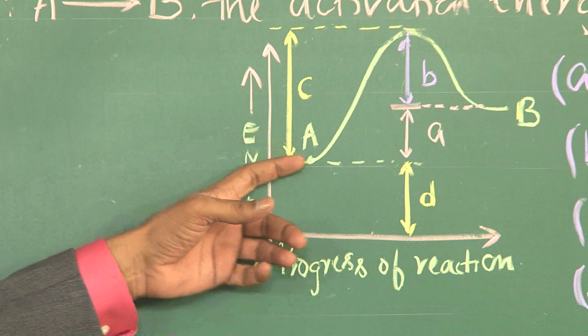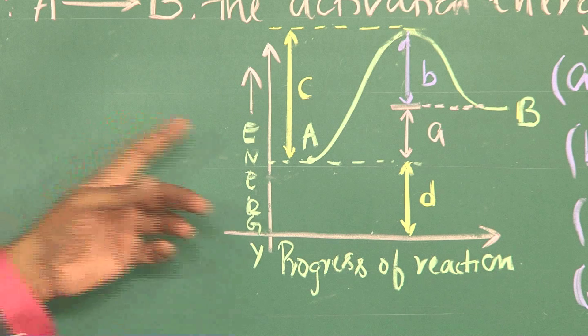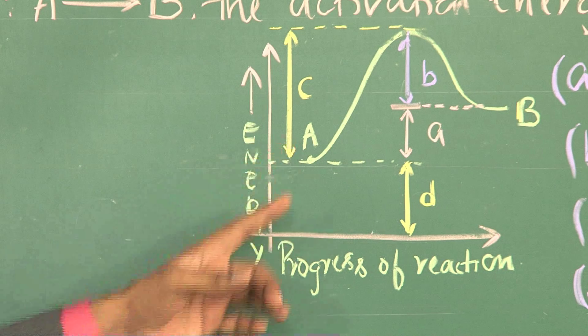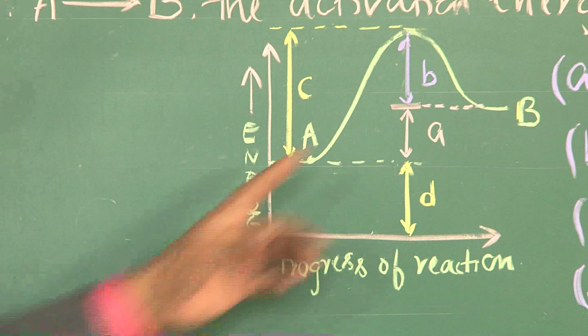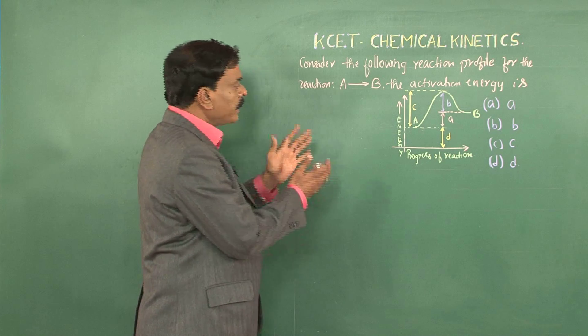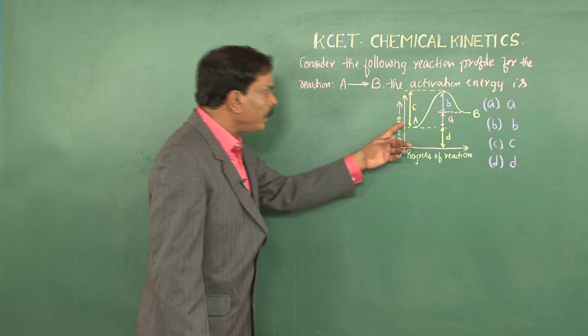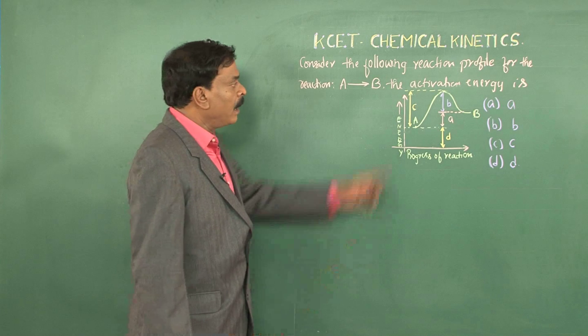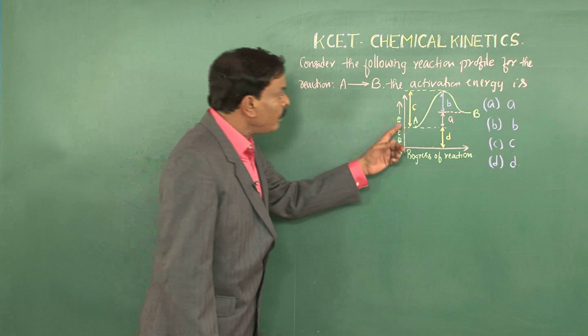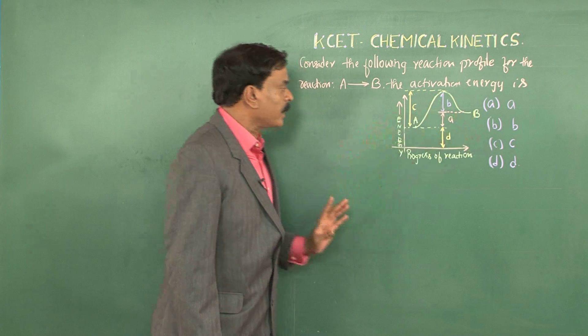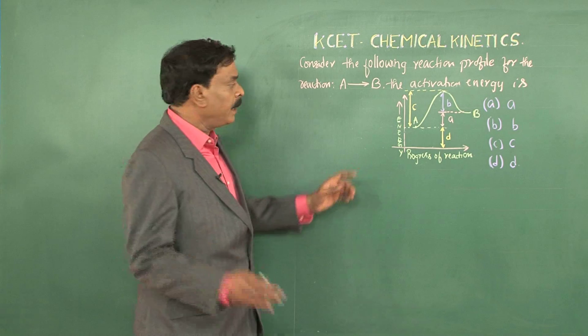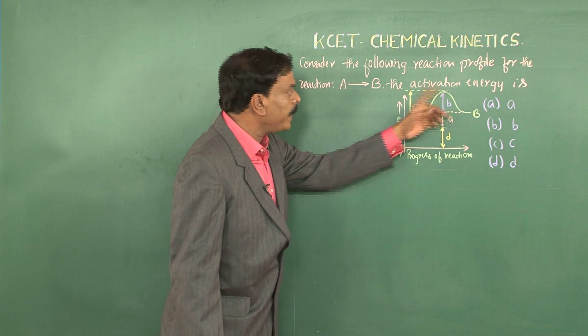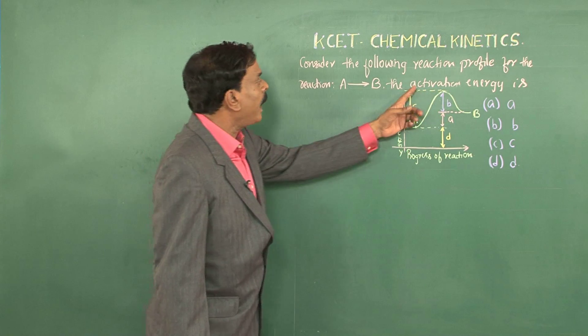Here, this level indicates the energy of the normal reactant molecules. If the reactant molecules are to change into products, that is B, then the reactant molecules have to collide and on collision, they have to form a high energy, unstable complex called the activated complex, which then loses energy to give the products.